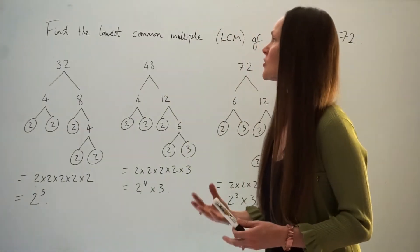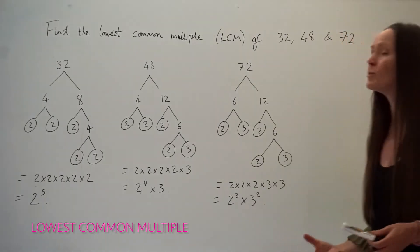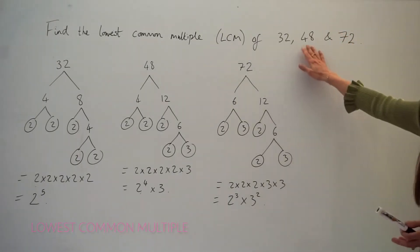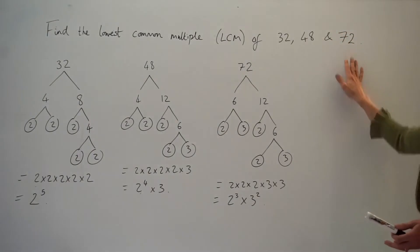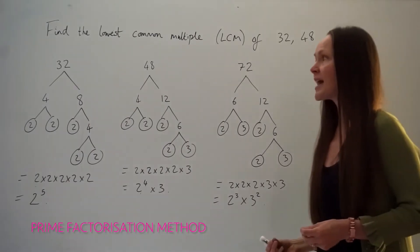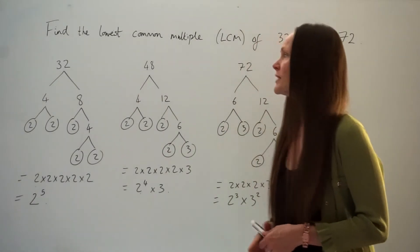So in part two I'm going to show you how to find the lowest common multiple of three numbers: 32, 48 and 72. The method is just the same as in part one.